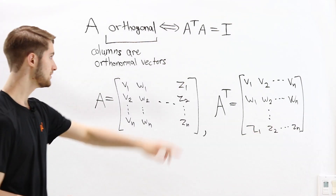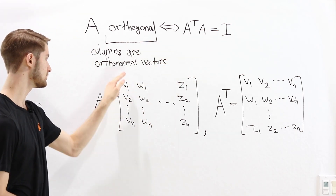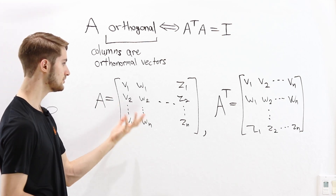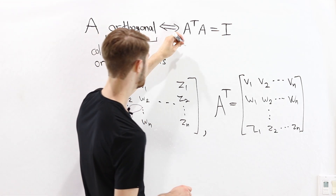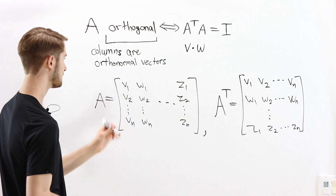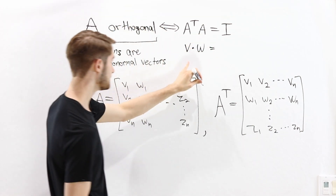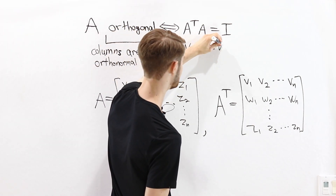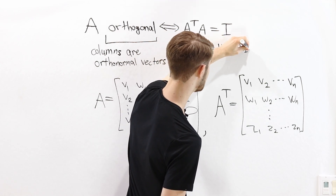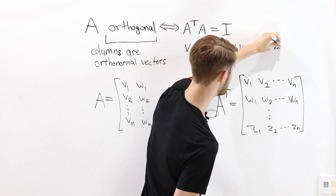Before computing A transpose A, we need to talk about what it means for these column vectors to be orthonormal. When we have two vectors, we compute the dot product v dot w by looking at the individual coordinates. The formula for v dot w is v1 times w1 plus v2 times w2, and so on all the way to vn times wn.